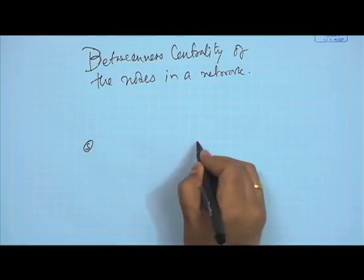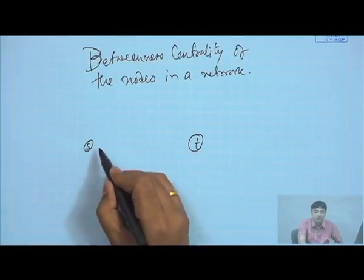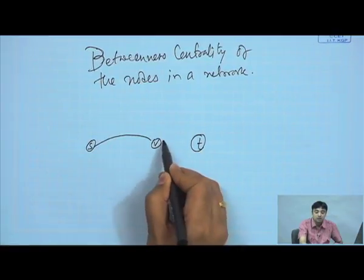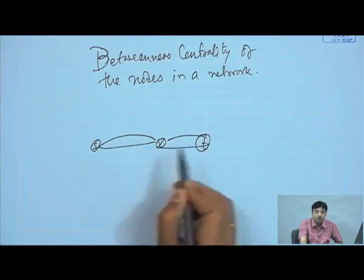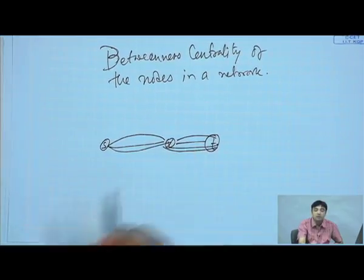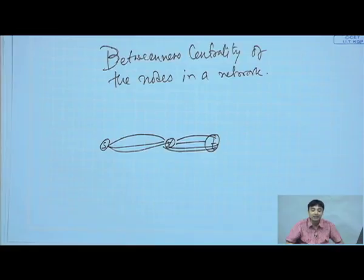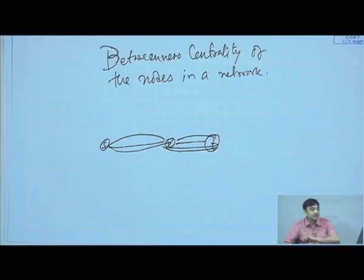For instance, if all the shortest paths between two nodes S and T get routed through V, then the betweenness of node V in the context of the pair of nodes S and T would be very high. That is what we try to define as betweenness centrality.